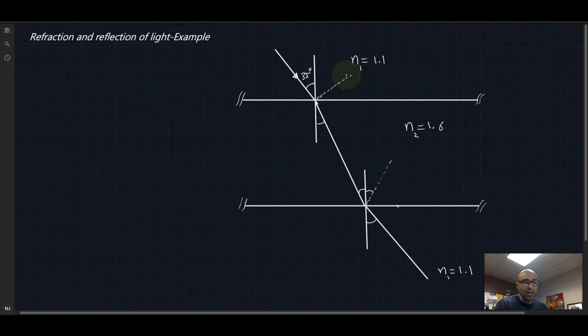So we need to find this angle. Okay, so let me call all of these angles. I'm going to call this angle theta 1, I'm going to call this theta 2.